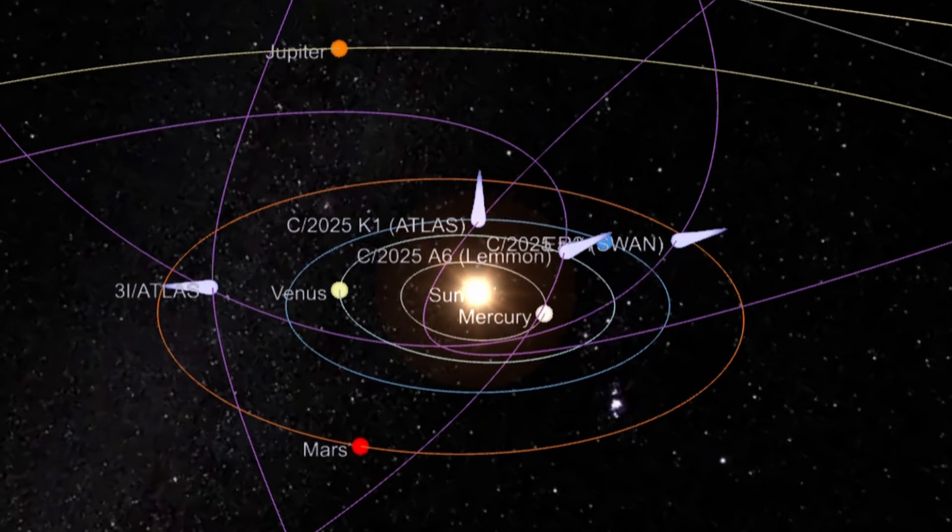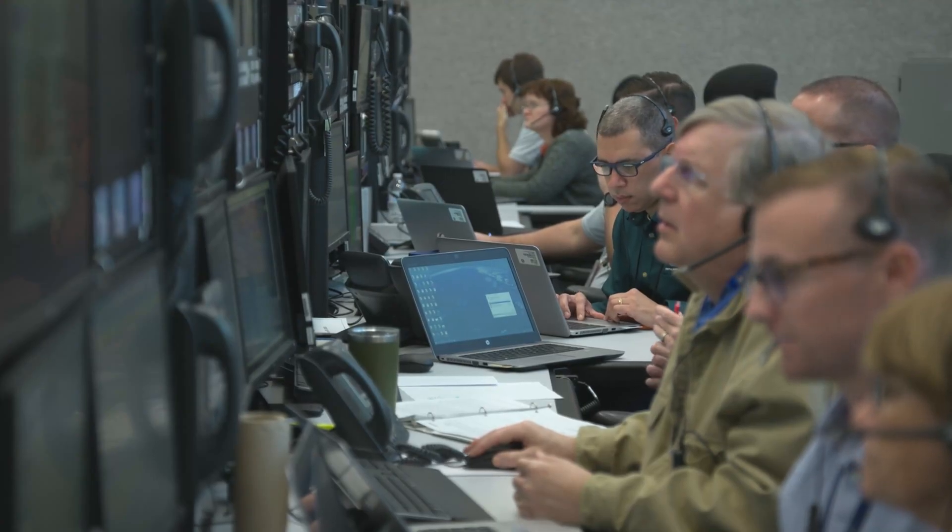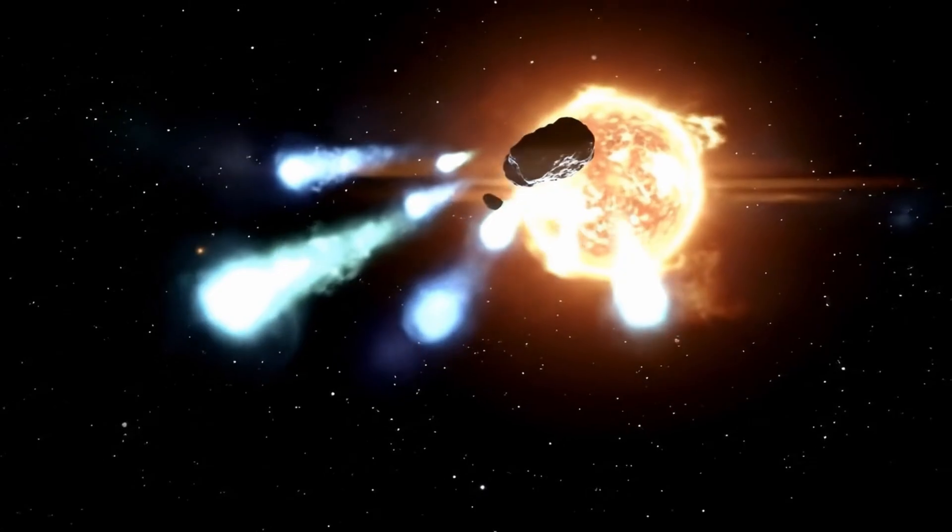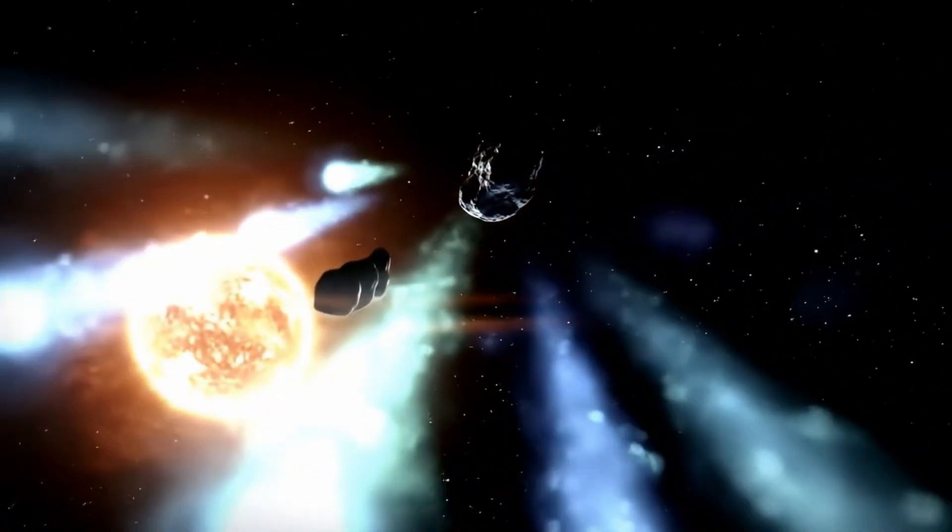A celestial fleet of comets, all bound for our sun, is converging on the traveler from another star system. This has never been witnessed before. What does all this cometary activity mean? Is there a message, or is this cosmic coincidence?